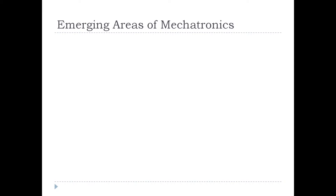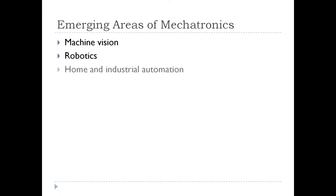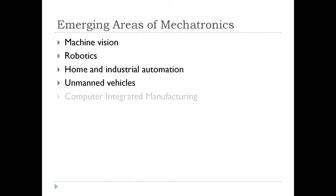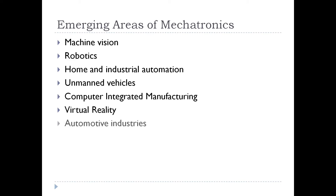Emerging areas of mechatronics include: machine vision, which uses image processing for analysis; robotics; home and industrial automation; unmanned vehicles; computer integrated manufacturing; virtual reality; automotive industries; and the medical field.